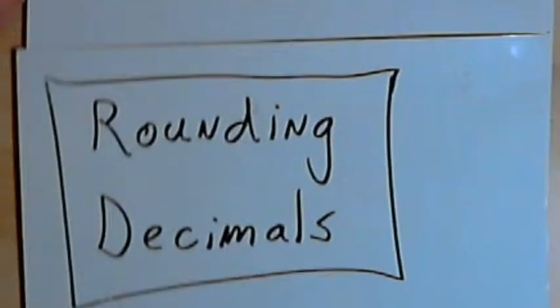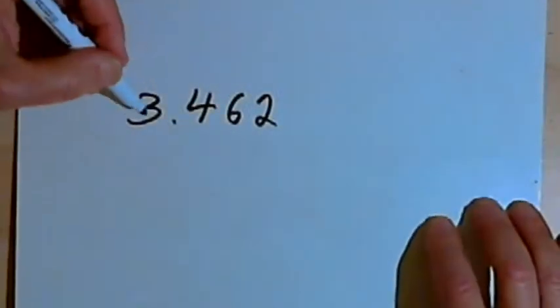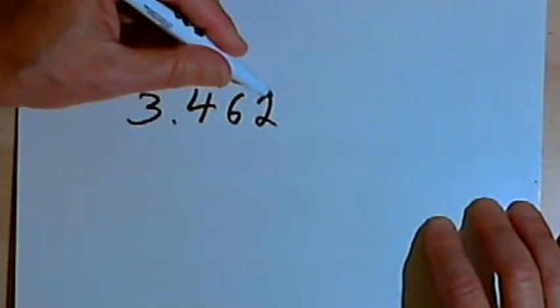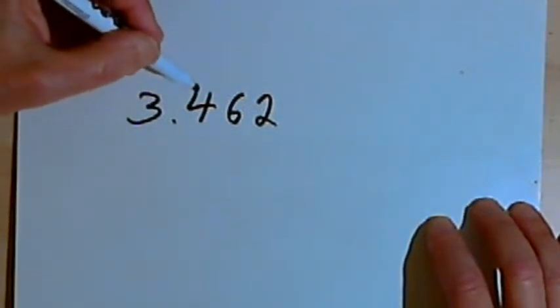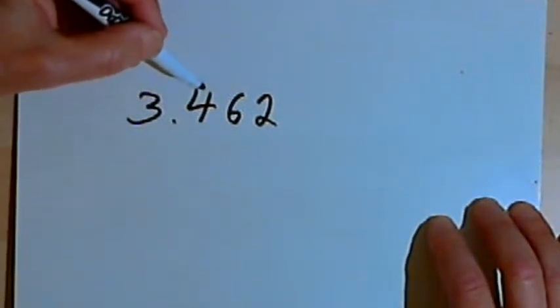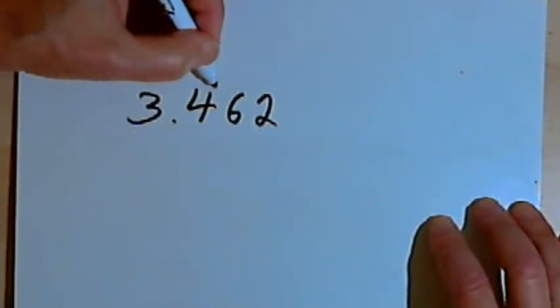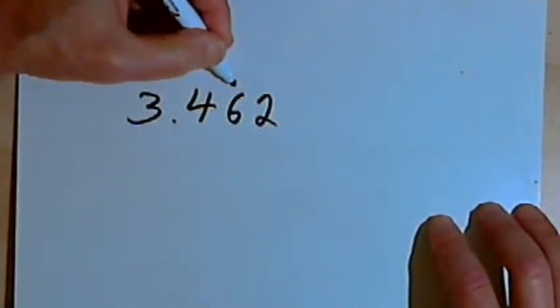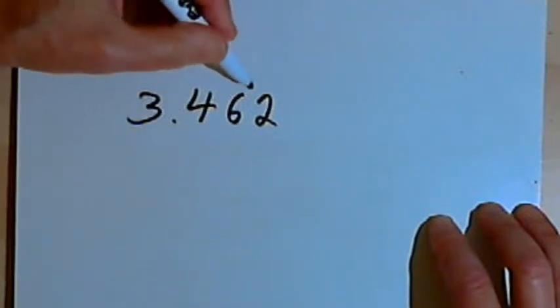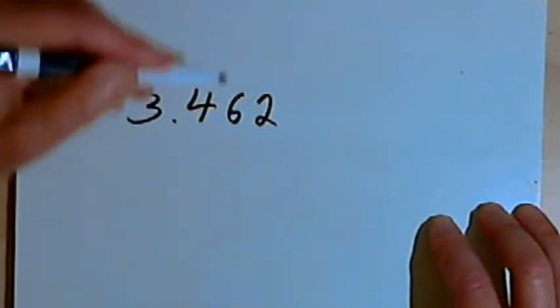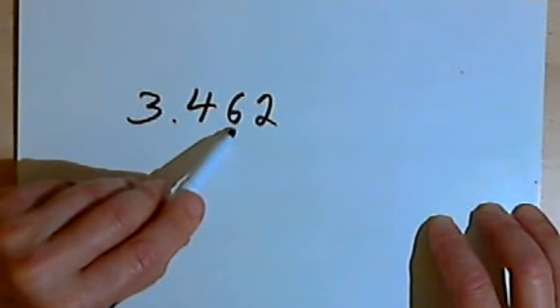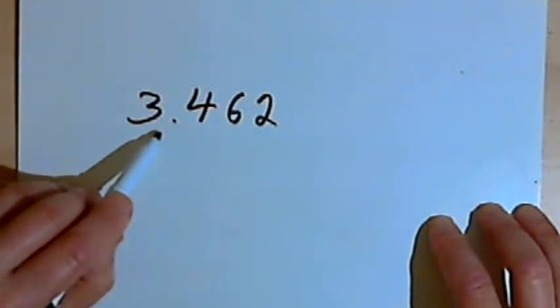So here's the first example. I've got the number 3.462, and let's say I want to round that to the nearest tenth, or to one decimal place. What I'm going to do is go one decimal place further than what I want to round it to. That will take me over to the second decimal place. And if the digit there is 5 or greater, I'm going to round my number up.